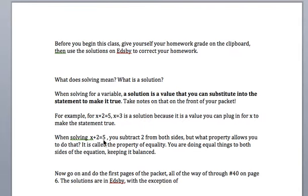When solving x plus 2 equals 5, you actually have to subtract 2 from both sides. But what property allows you to do that? It's called the property of equality. You are doing equal things to both sides of the equation, keeping it balanced.